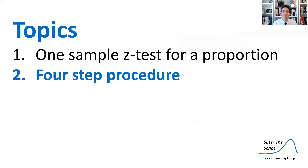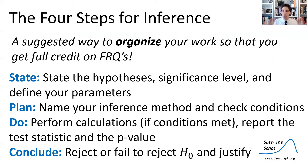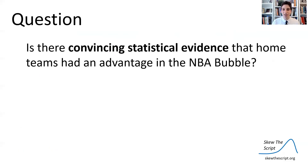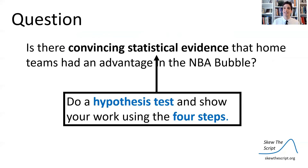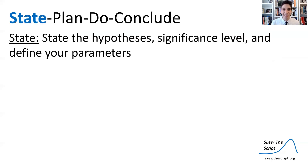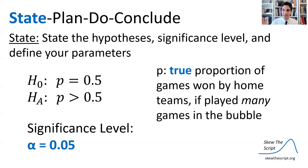So let's organize this in a way that gets full points on the AP exam through a four-step procedure. The four steps for inference — State, Plan, Do, Conclude — is a way to organize your work when doing a hypothesis test or confidence interval to get full credit on FRQs. First step is State. We need to state the hypotheses, the significance level, and define our parameter values. Here are my hypotheses. My significance level by default is going to be 0.05 — we assume alpha = 0.05. And we define the parameter: p is the true proportion of games won by the home team if you played many games in the bubble.